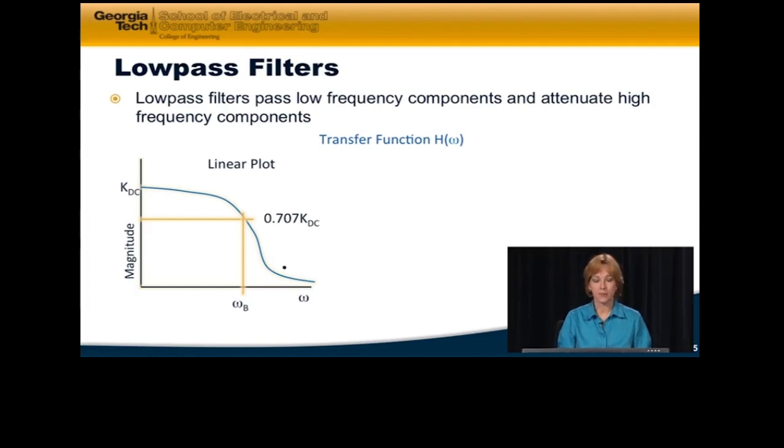If I plot on a linear plot, we have certain characteristics that we define for this. Two particular things that we use in design. One is the bandwidth, which is the value at which it's 0.707 of what we call the DC value. Versus a frequency plot, DC value is at omega equals zero. So we look at the value of the plot right there and I'll call that the DC gain.